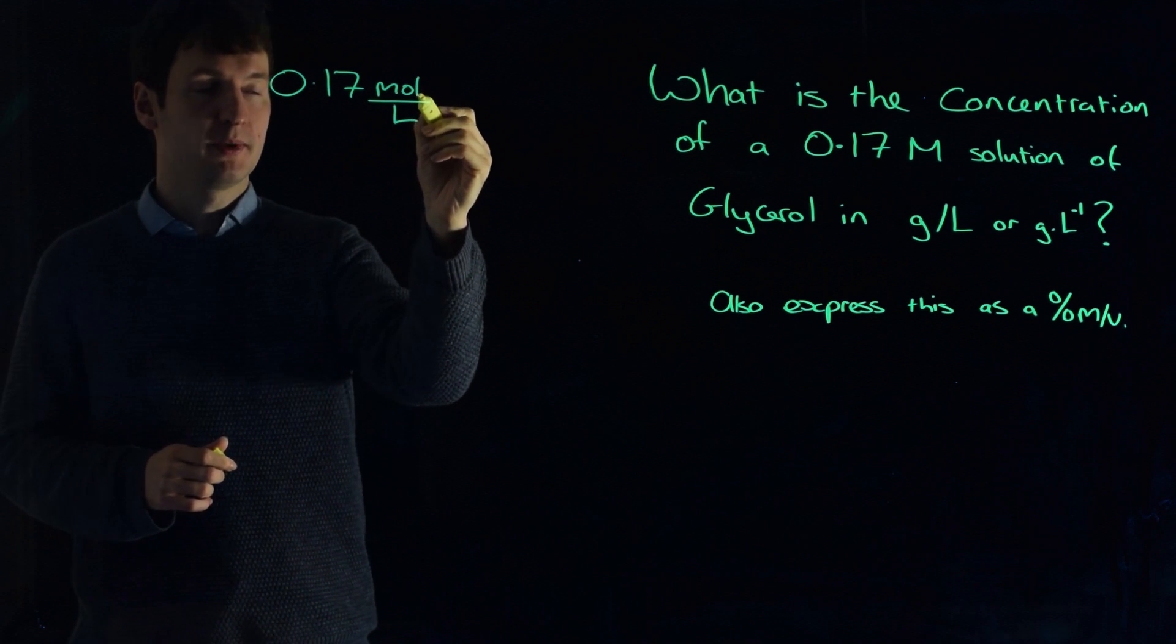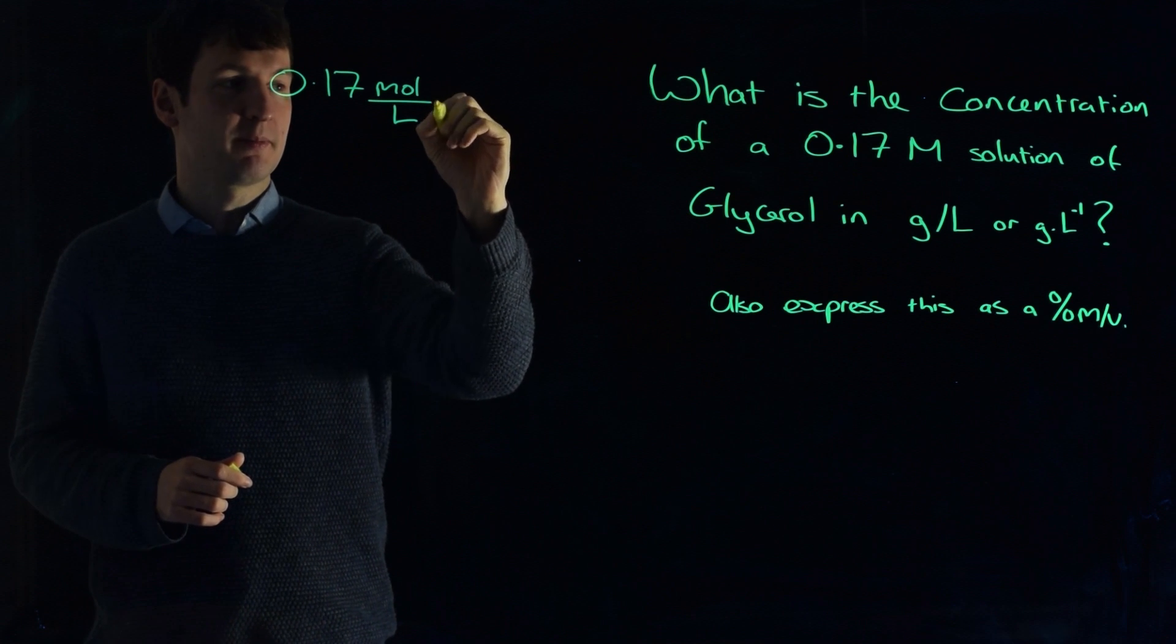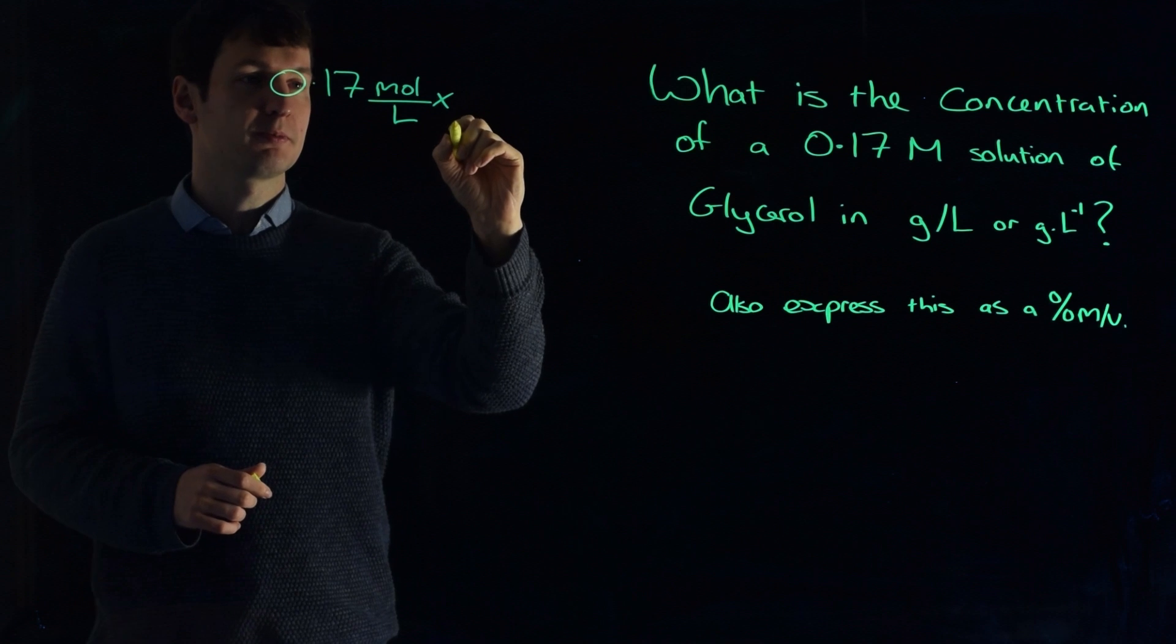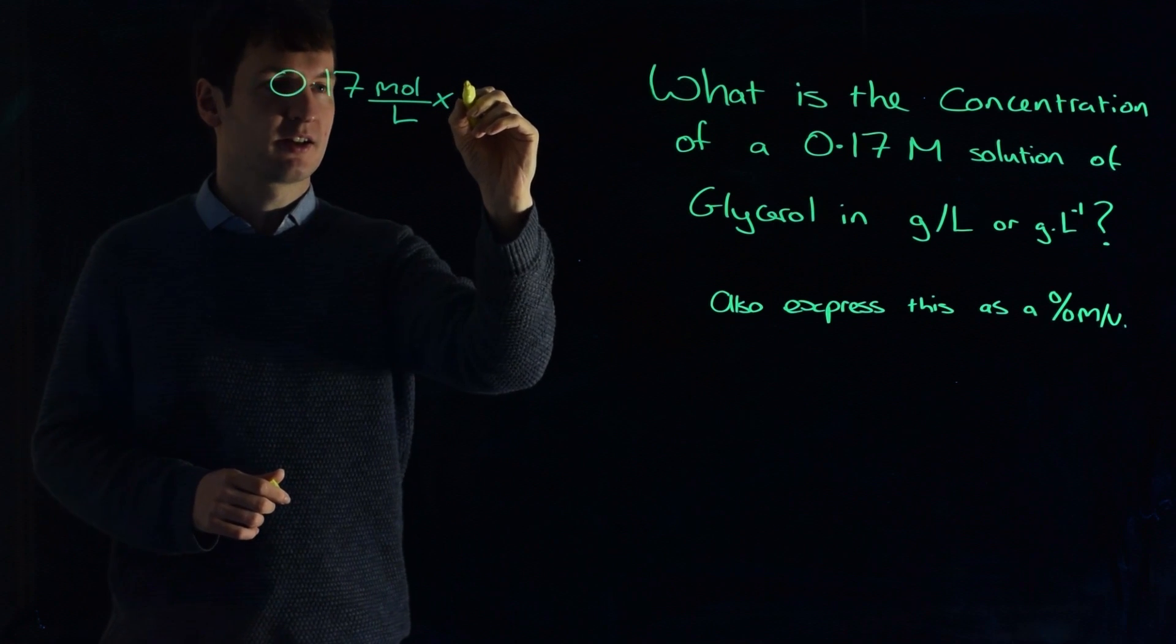If we want to turn moles into grams, we have to multiply by its molar mass. And we already calculated our molar mass, so multiply that by, if we go back to the earlier question...